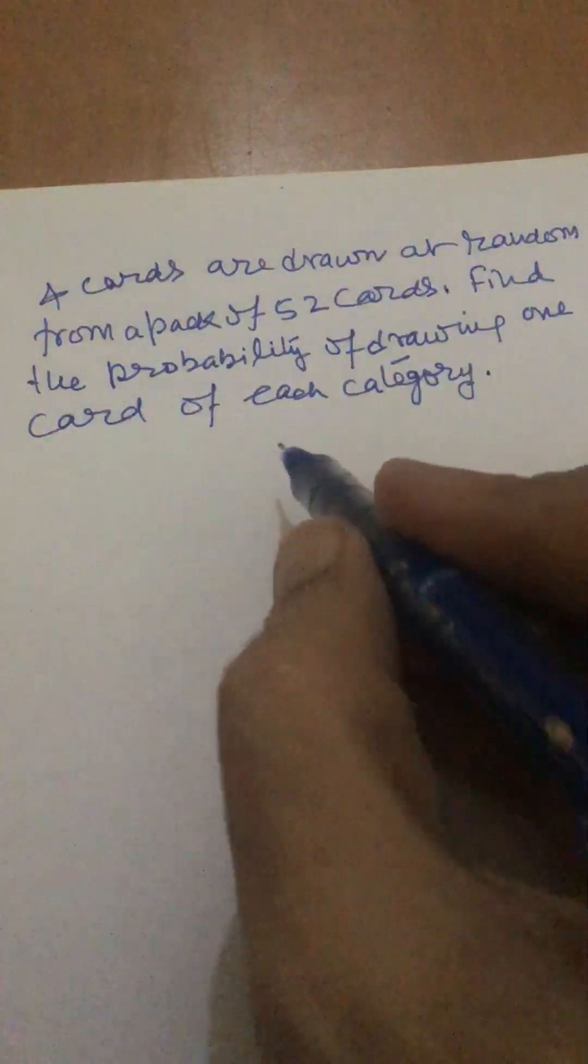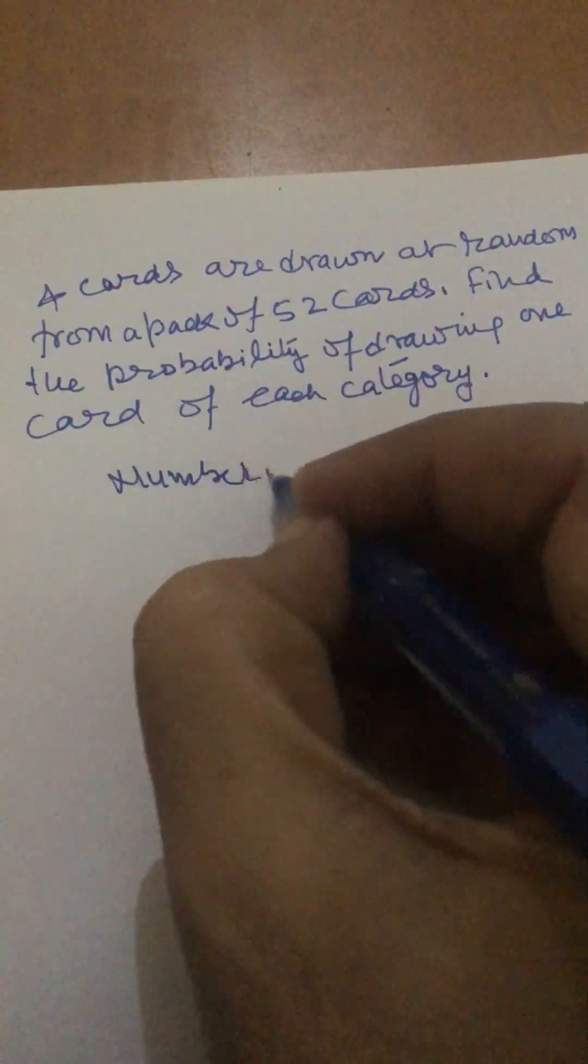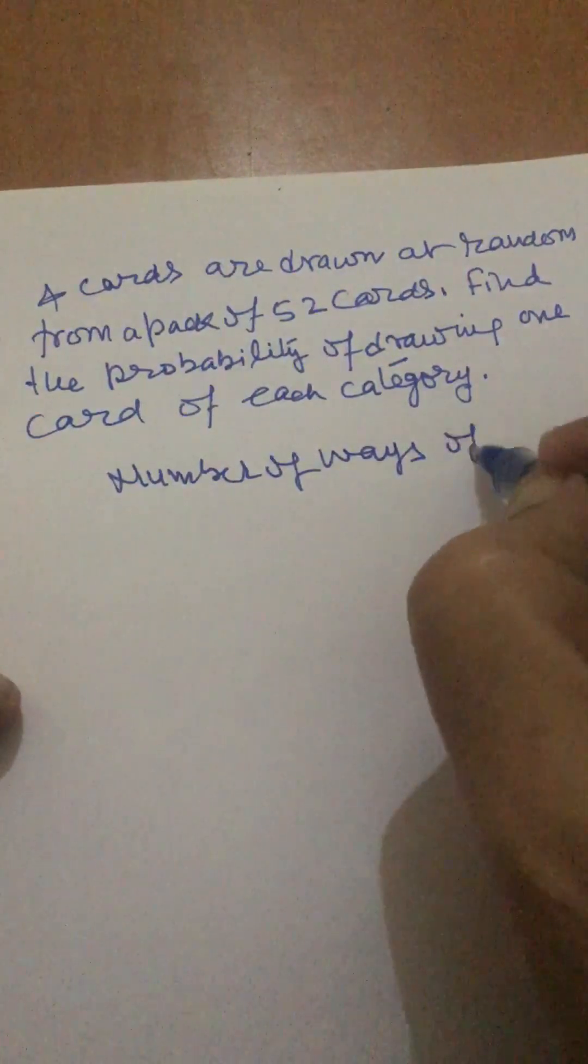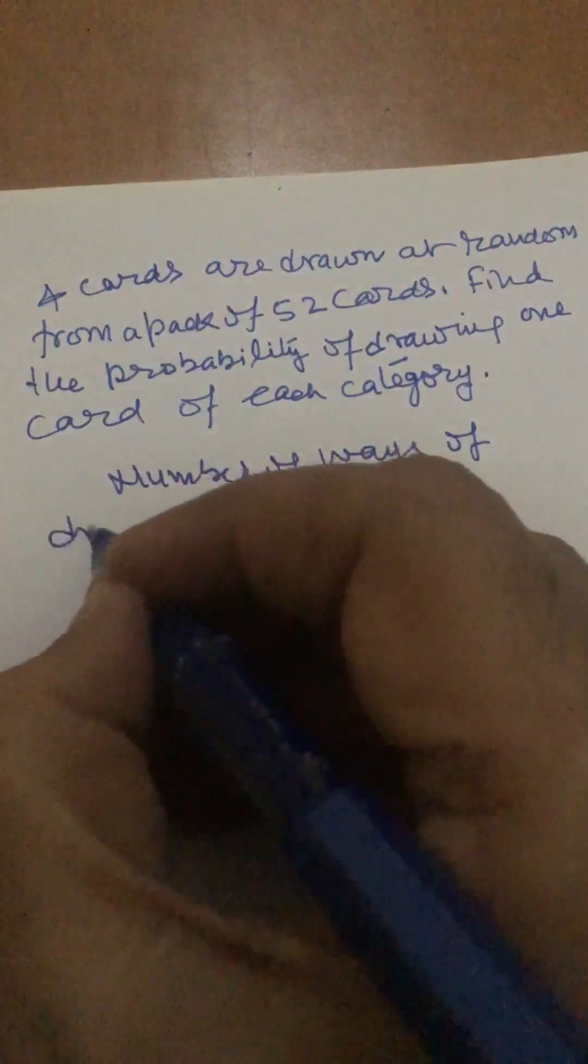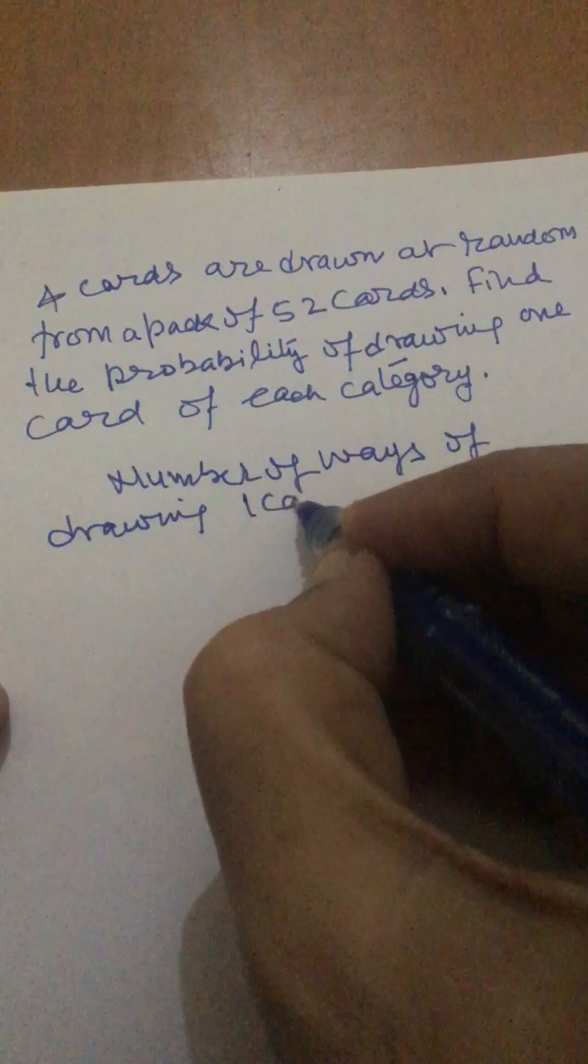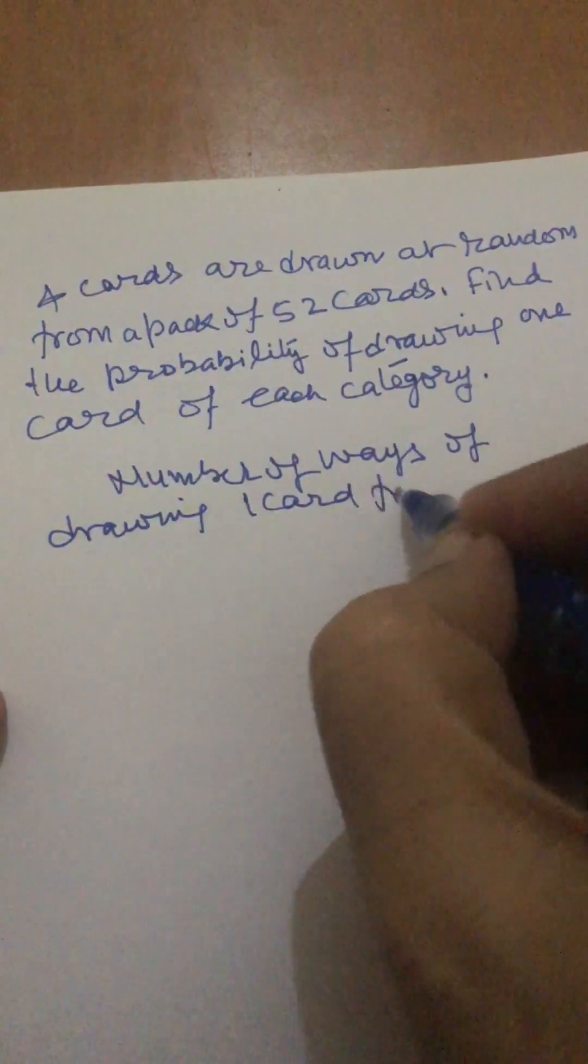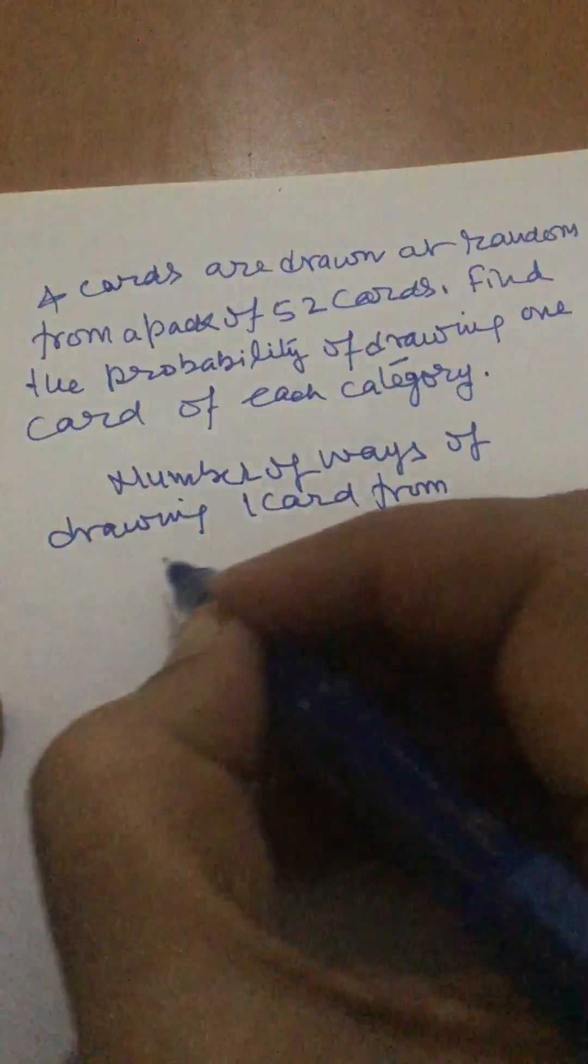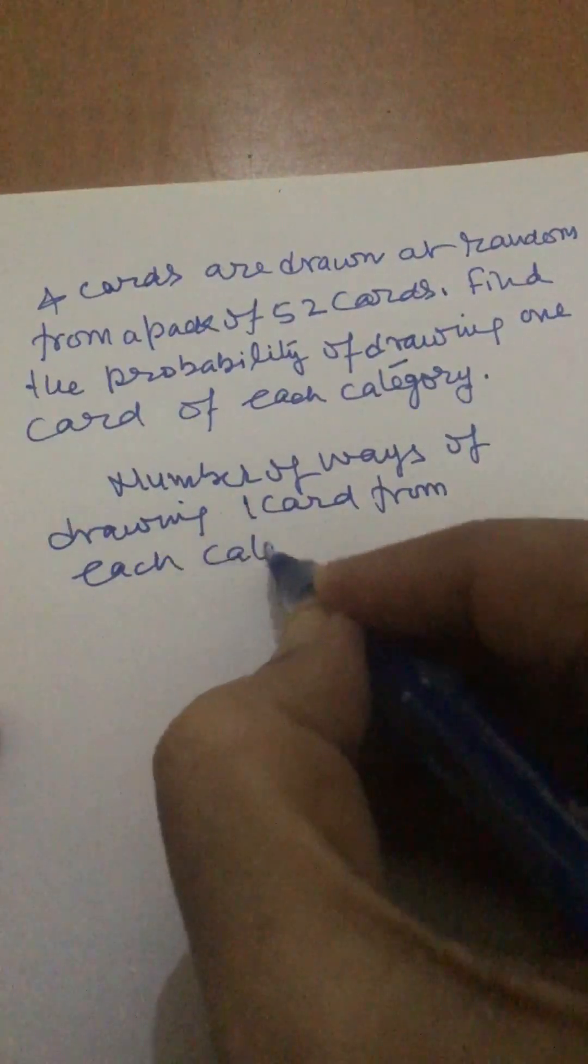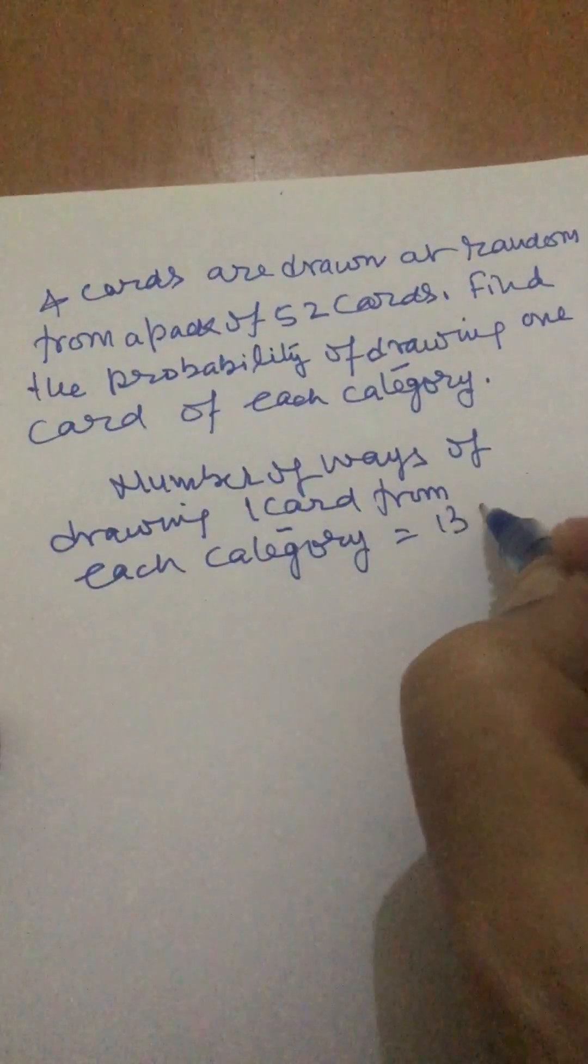So number of ways of drawing one card from each category will be 13. Number of ways of drawing one card from category will be 13C1.